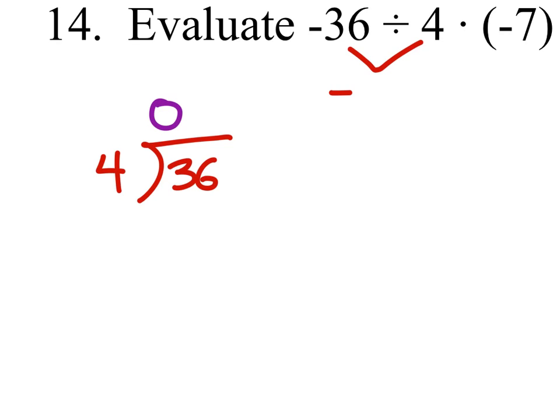4 doesn't go into 3, but 4 goes into 36 nine times. 9 times 4 is 36. So we'll subtract that out, and we have 0 remaining.